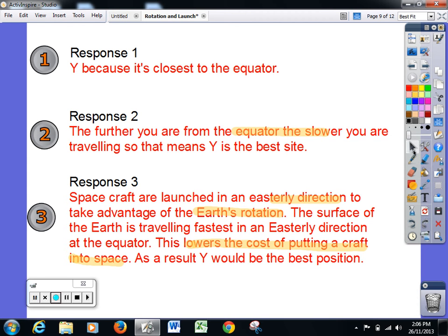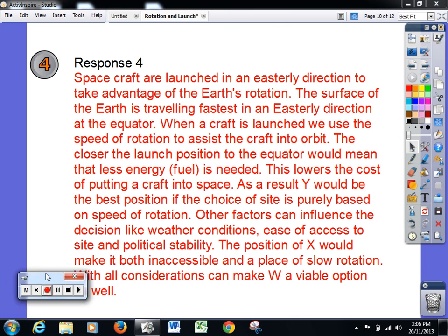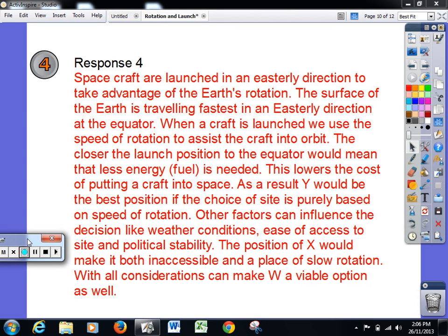So this is quite a good response, but it's still not getting to the highest level. And now we have a look at a complete response. It's slightly more than is needed. So response number four says the spacecraft is launched in an easterly direction to take advantage of the Earth's rotation. So it's starting in the same way as the last. It explains why the surface of the Earth is travelling fastest in an easterly direction of the equator. So it understands that we need to be as close as possible to the equator.